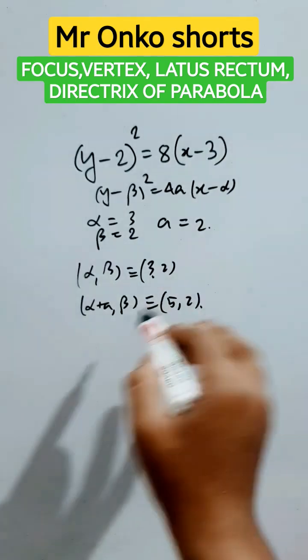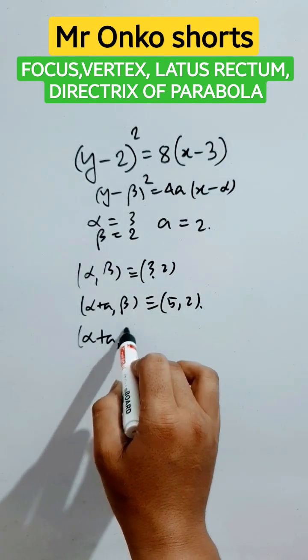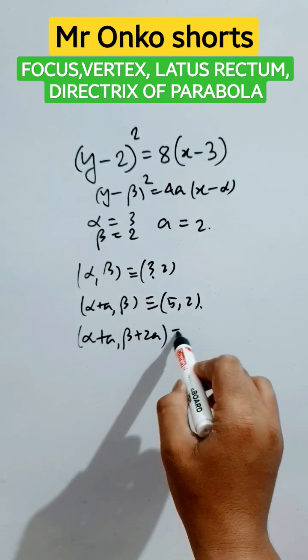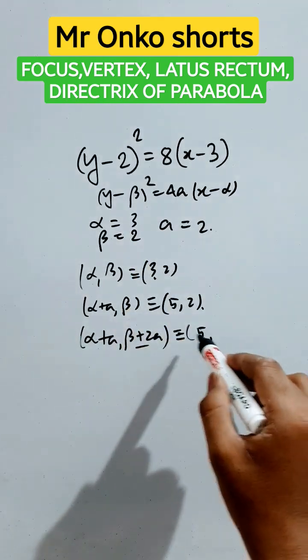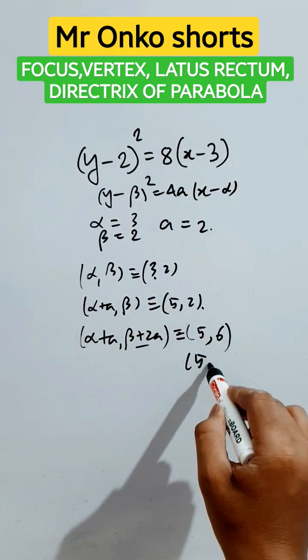The endpoints of latus rectum will be (α+a, β±2a). It is plus or minus twice a: (5, 2±4), so that is (5,6) and (5,-2).